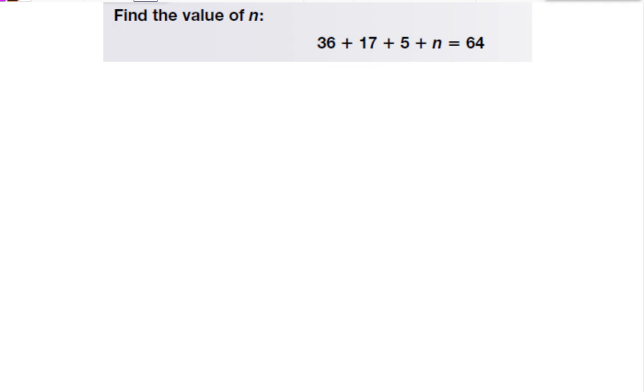Okay, so here it wants us to find the value of n. Before I can find the missing number, I first have to add up all of the addends that I do know. So we would do 36 plus 17 plus 5, which equals 58. So I'd have 58 plus n equals 64.